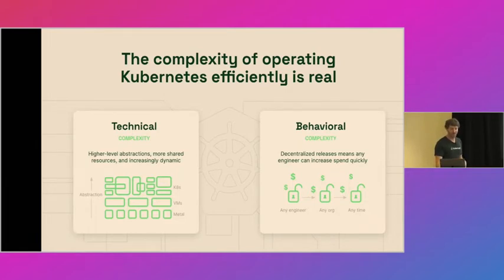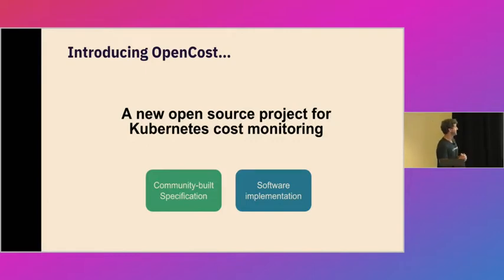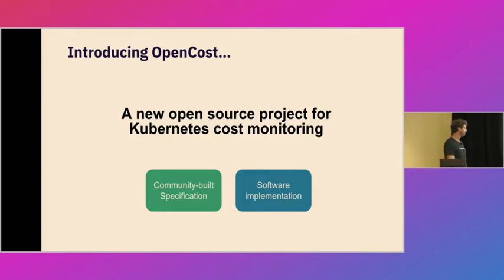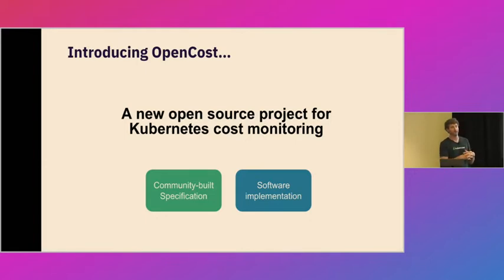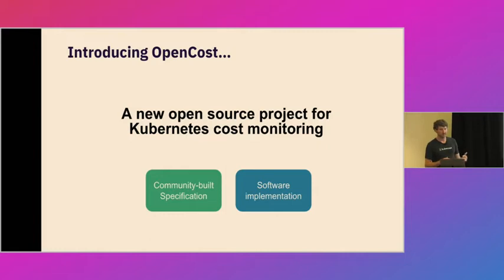For that reason, we are super proud to introduce the brand new OpenCost effort. It is a new open source project for cost monitoring and cost allocation in Kubernetes environments. It is vendor agnostic, Apache 2.0 licensed, and now all of two weeks new. The project itself has two pieces: first, a community-built spec that talks about how and why to do accurate Kubernetes cost monitoring. And then the KubeCost team has contributed our core cost allocation engine, which is a working implementation of that spec for AWS, Azure, GCP, and on-prem clusters.